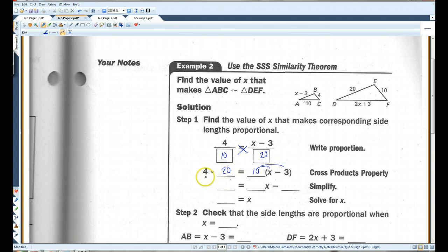I have to distribute the 10. 4 times 20 is 80. If I add 30 to both sides, I get 110 equals 10x. And then if I divide by 10, x equals 11.